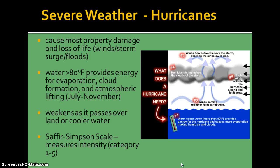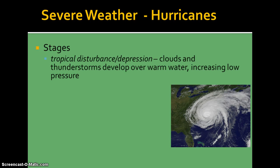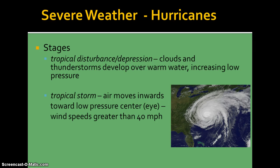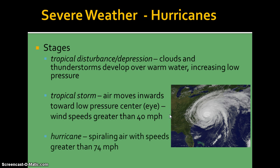The scale used to measure hurricanes is the Saffir-Simpson, ranging from Category 1 to Category 5. Hurricanes start off as basically a thunderstorm — a tropical depression or disturbance. As pressure continues to drop, more air rises at the center. When that low-pressure center, or the eye of the storm, starts moving inward with a swirling appearance, we call it a tropical storm. Tropical storms have winds greater than 40 miles per hour. Once it reaches 74 miles per hour, that's when it's called a hurricane.